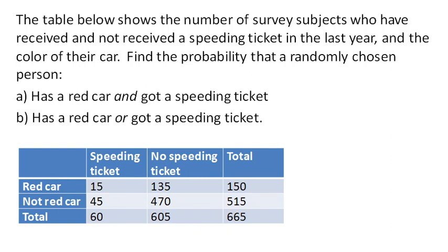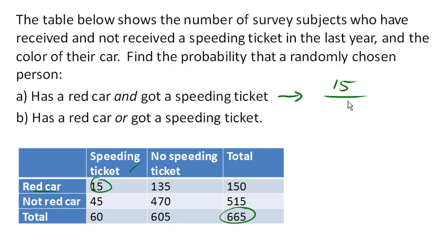For the first question, where it asks for a red car and got a speeding ticket — how many people both had a red car and got a speeding ticket? Well, in this case there are 15 of them. So 15 people both had a red car and got a speeding ticket, out of 665 total people. So that's the probability of having a red car and getting a speeding ticket.